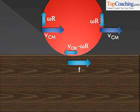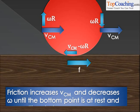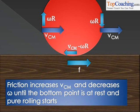Therefore, this is what happens after some time. As you can see, VCM, the center of mass velocity of the ball, keeps on increasing and omega r, the velocity of the ball because of its angular velocity, keeps on decreasing.